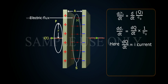Here, dq by dt equals I current. Therefore, derivative of φₑ by dt equals I times 1 by ε₀. Rearranging, I equals ε₀ times derivative of φₑ by dt.